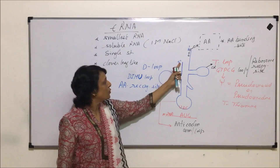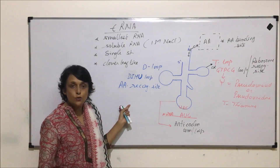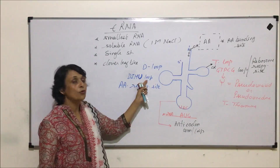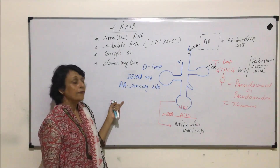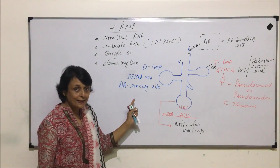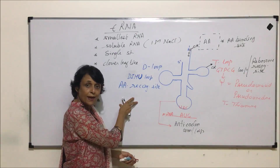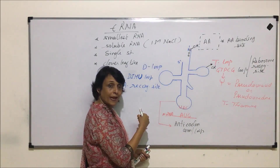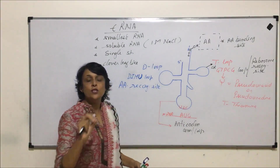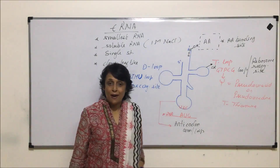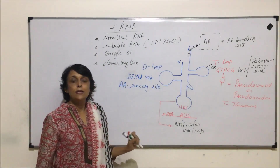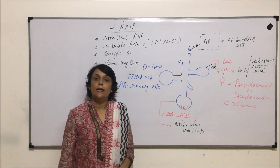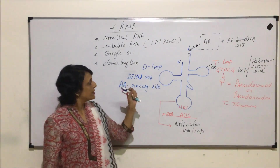The loop towards the 5' end is the D-loop, named because it has dihydrouracil (DHU-loop). Its function is amino acid recognition. So the D-loop recognizes the amino acid, the anticodon arm reads the mRNA codon, and the T-loop identifies which ribosome the tRNA must take the amino acid to. All these parts work in coordination, and the tRNA brings the amino acid to the ribosome where it helps in protein synthesis.